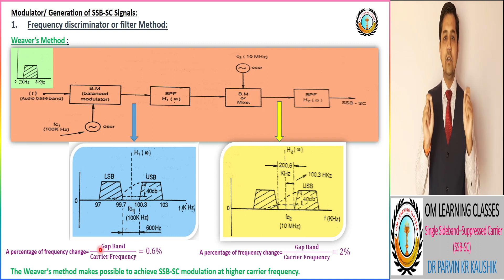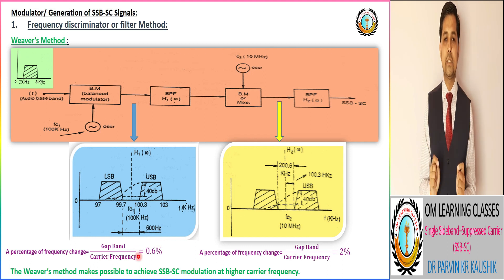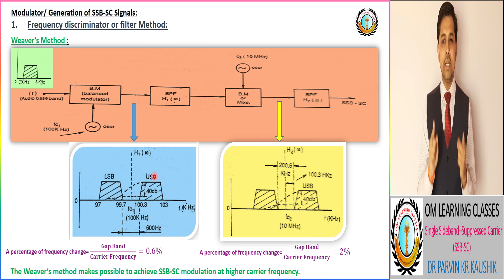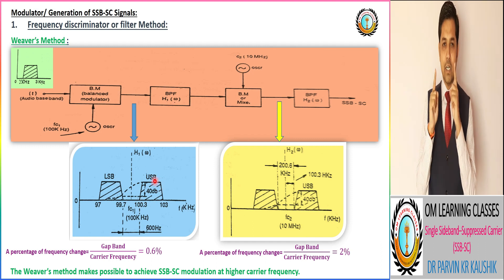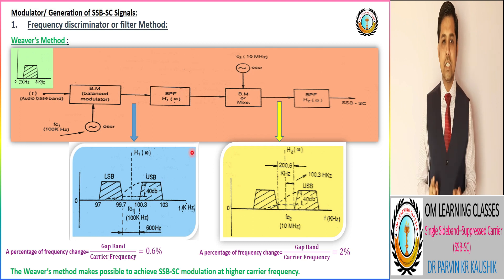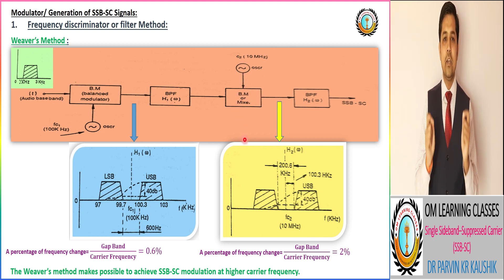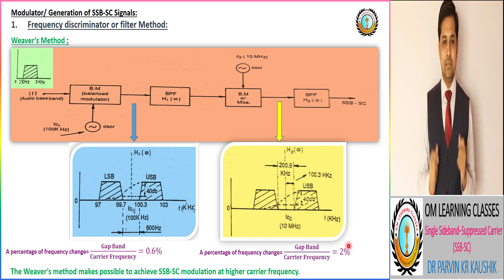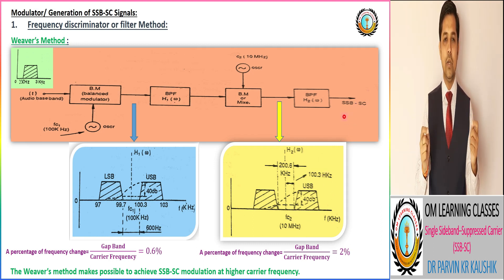A filter with a selective frequency change of 0.6% is feasible. The upper sideband signal, operating from 100.3 kHz to 103 kHz, is transmitted to the second stage. In the second stage with a 10 MHz operating carrier frequency, the percentage of frequency change is equivalent to 2%, which is also practically feasible. By using this Weaver method, we can sort out the other restriction of the filter modulator method.